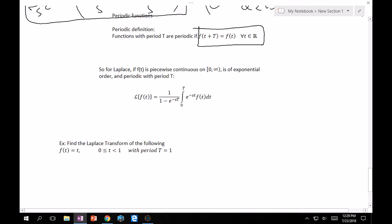And so, how you do this goes as follows. So, for Laplace, if f of t is piecewise continuous, from zero to infinity, which you should have anyways, and is of exponential order, again, prerequisite, and periodic with period capital T, then the Laplace of that periodic function is 1 over 1 minus e to the minus s capital T, so the period, integral from zero to capital T, e to the minus s t, f of t, dt.